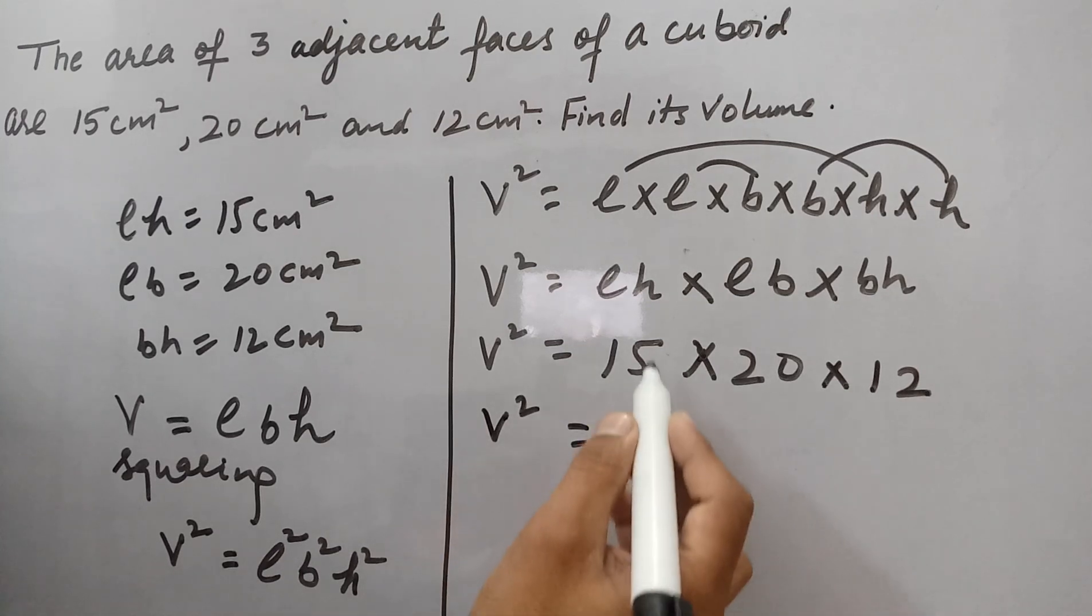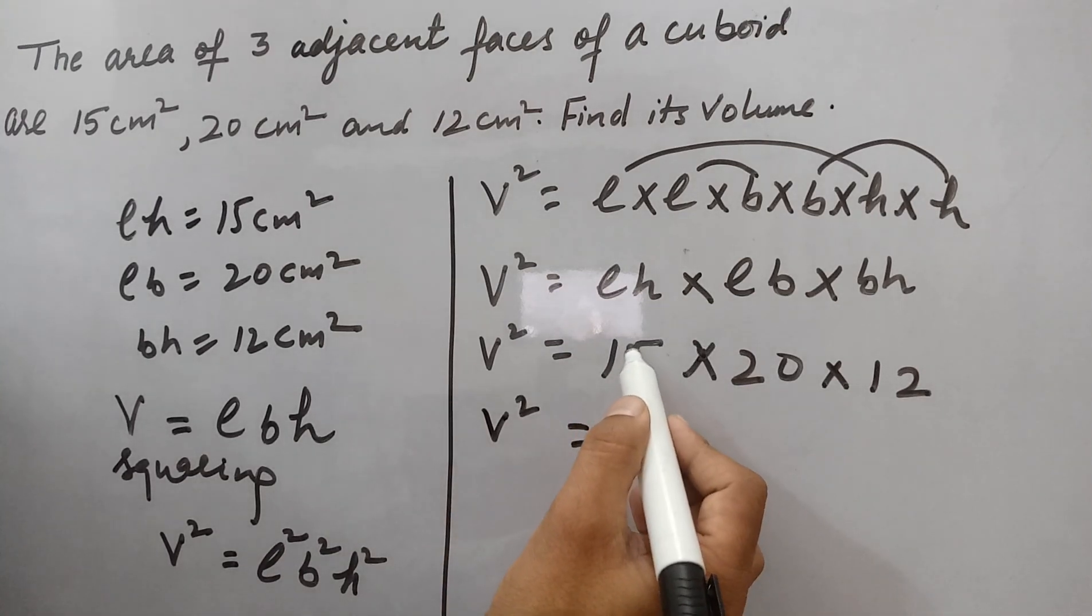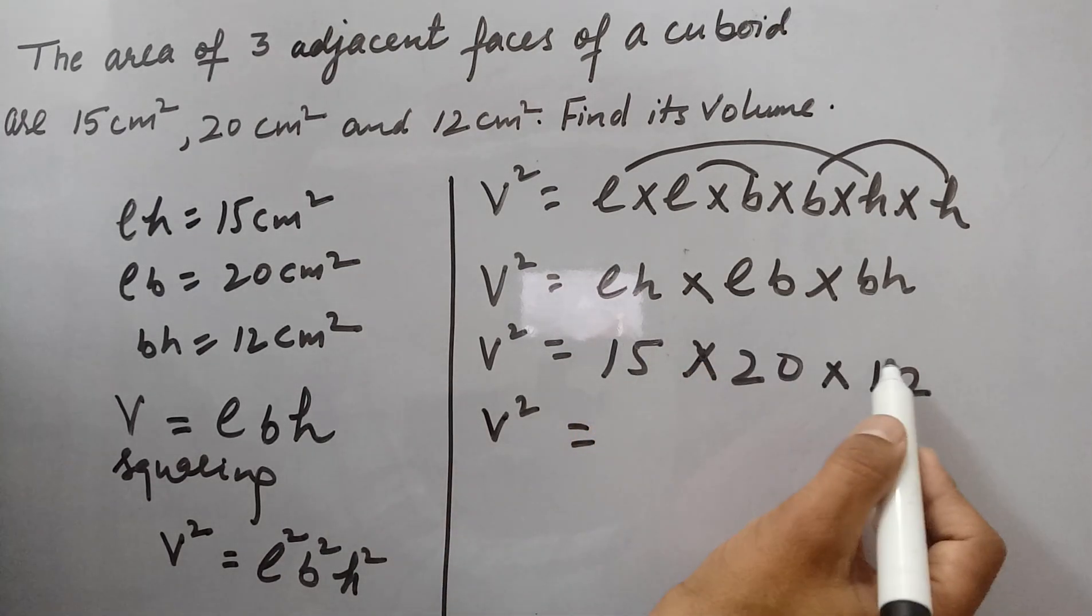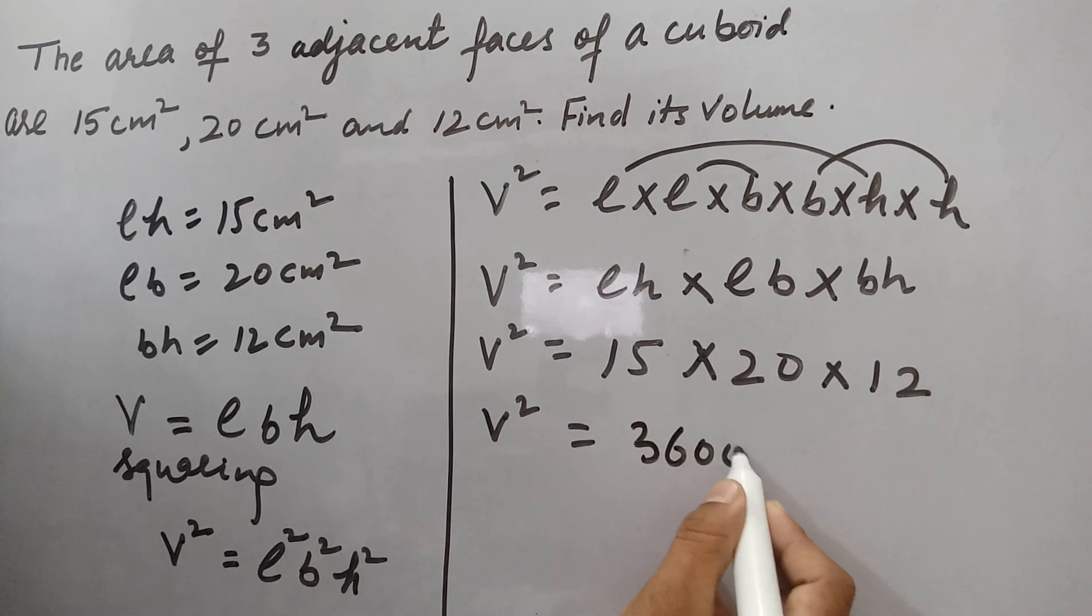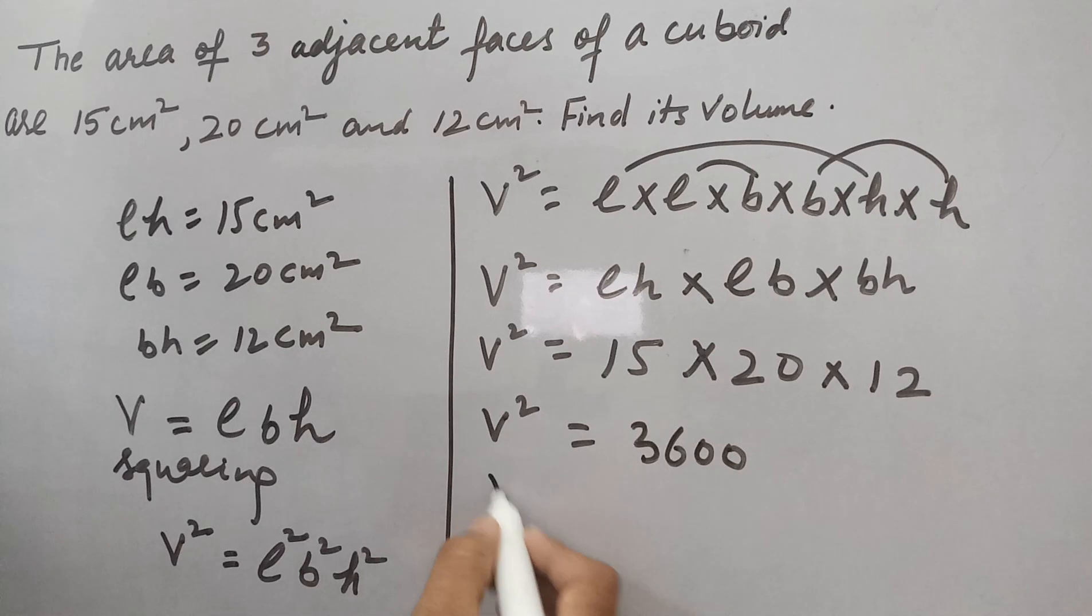So it becomes if we multiply these all we will get 15 × 20 × 12, which becomes 3600. So we know volume squared is 3600, which is the square of 60.